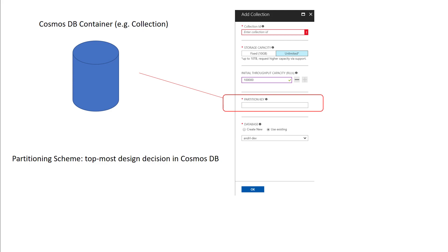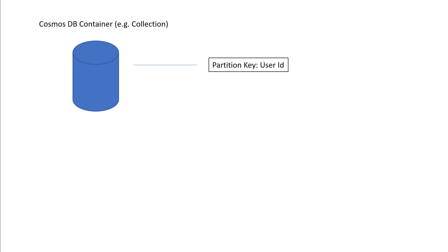It is very important to choose a good partition key for your application. In fact, this is likely going to be the number one design decision you'll make with respect to Cosmos DB. We'll give you an example of choosing a partition key and try to demystify what happens underneath the scenes. In this example scenario, we have chosen user ID as our partition key.